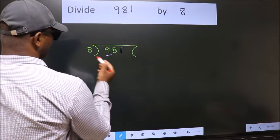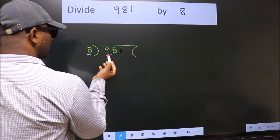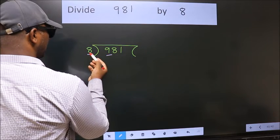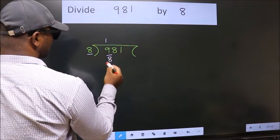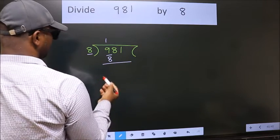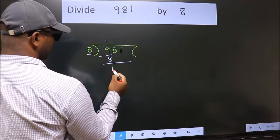Here we have 9, here 8. A number close to 9 in the 8 table is 8 once, 8. Now we should subtract. We get 1.